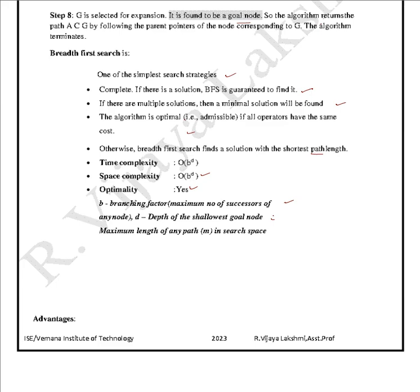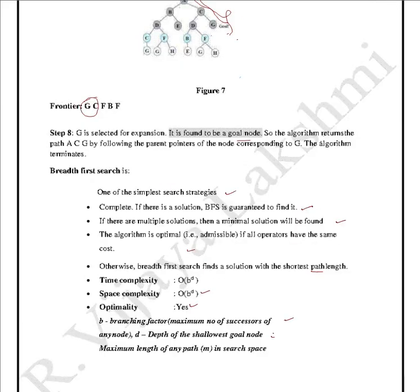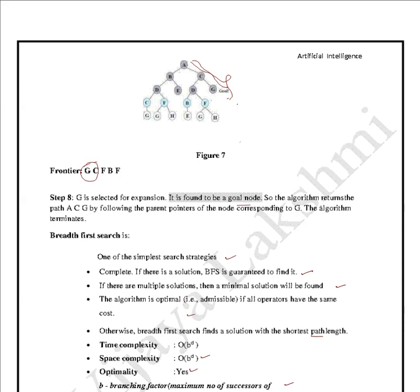I hope you understood how breadth first search works — at each level, for all nodes, it checks whether it is the goal node before going to the next level. This is a very important question for external examinations: you need to take a graph, expand it, and explain the algorithm. Please don't forget to subscribe, like, share, and comment. Thank you.